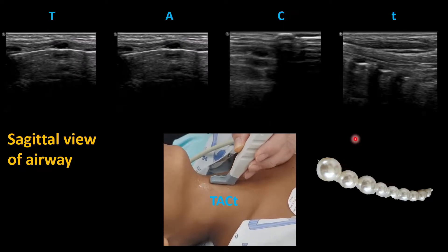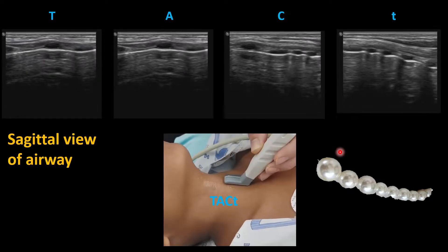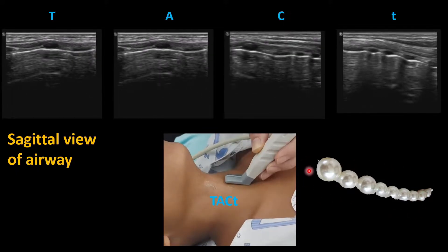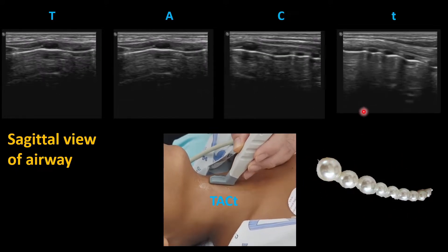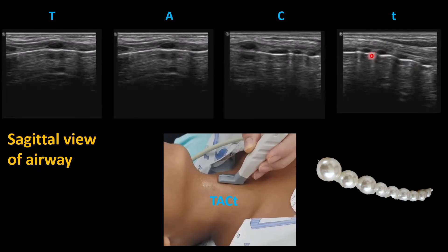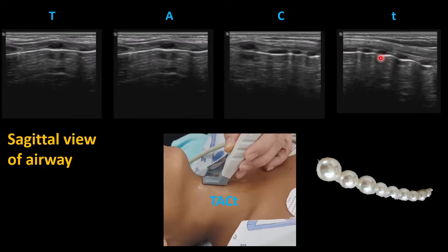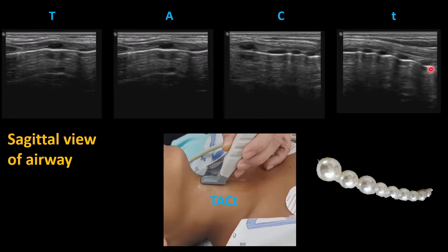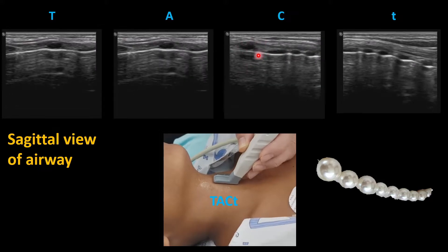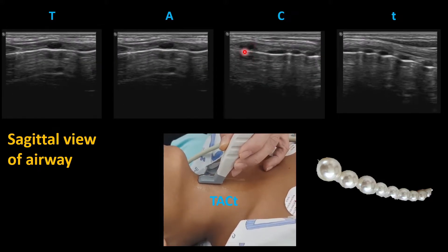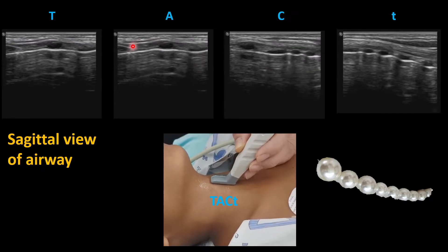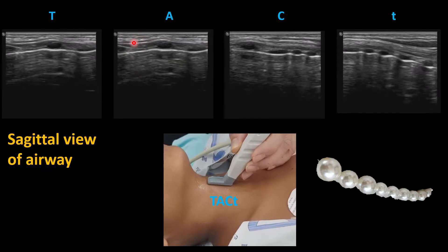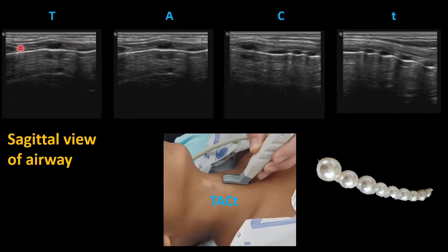After the transverse view, one can assess the longitudinal or sagittal view. As you move the probe, the structure you see looks like a chain of pearls with a big pearl at the end. The tracheal cartilages appear blackish in color in a chained manner. The biggest pearl represents the cricoid cartilage. Moving further, you can see the membrane — the tracheal cartilage membrane — and then the tracheal cartilage appearance.